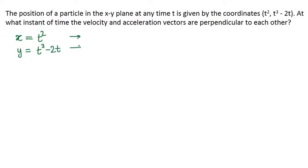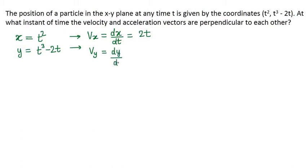Let us find out by differentiation the x-component of velocity. The x-component of velocity will be dx/dt, that means differentiation of t², which is 2t. And the y-component of velocity will be the differentiation of y with respect to t, dy/dt. That is differentiation of t³ gives 3t² minus differentiation of 2t which is 2.